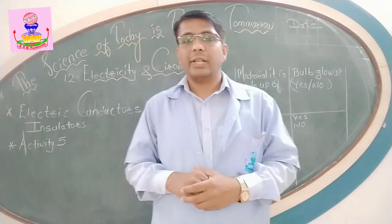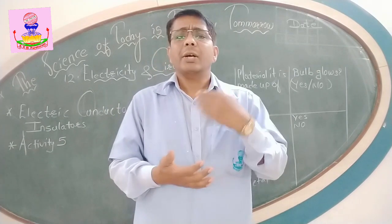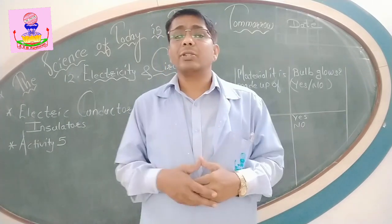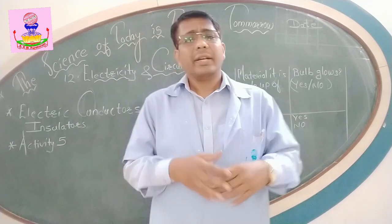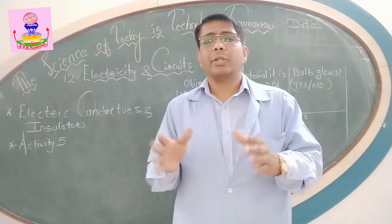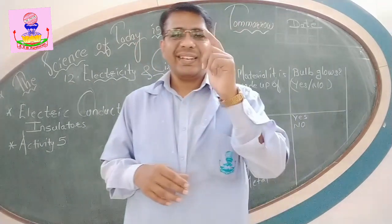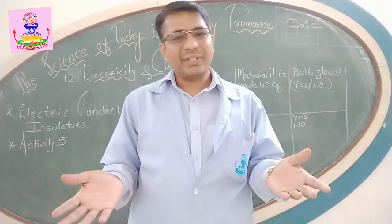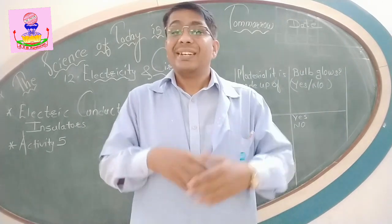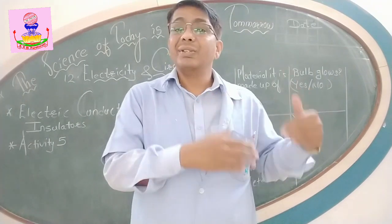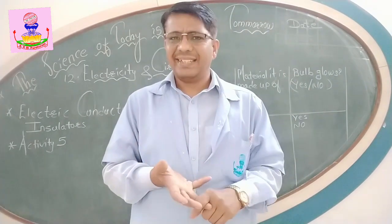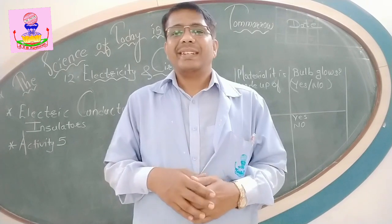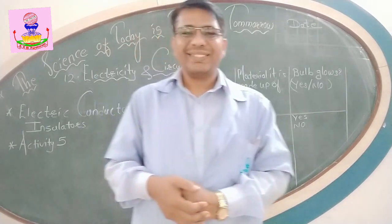The substances which do not allow electric current to flow through them are called insulators. Rubber, plastic, wood — these are all examples of insulators. Air, as I have shown, is also an example of an insulator. Thermocole does not allow electric current to flow through it, so it is also an insulator. Paper is also an insulator — you can check with paper as well.